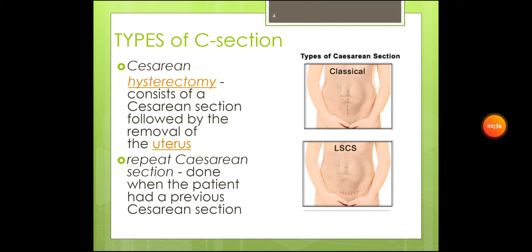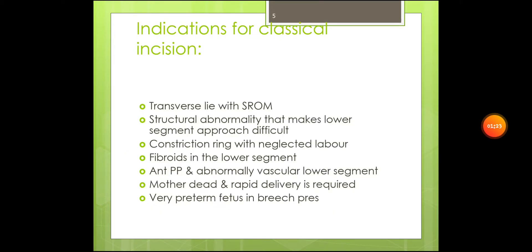Then there is cesarean hysterectomy, which consists of a cesarean section followed by the removal of the uterus. Repeat cesarean section is done when the patient had a previous cesarean section. As you can see in the picture, this shows the types of cesarean section: classical cesarean section with a longitudinal incision, and lower segment cesarean section with a transverse incision.